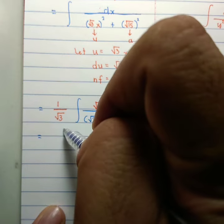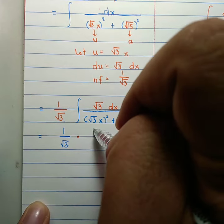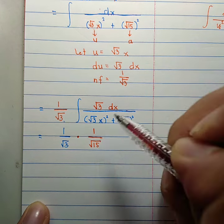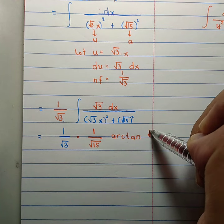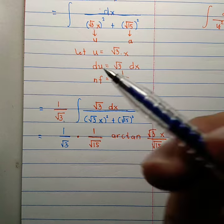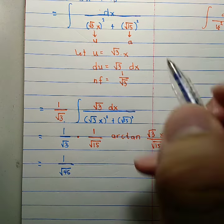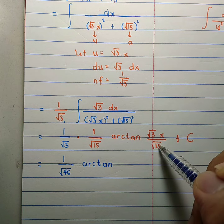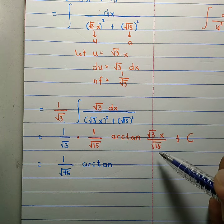We can now apply the formula. We have (1/√3) times (1/a) — where a = √15 — times arctangent(u/a). Simplifying: (1/√3)·(1/√15) = 1/√45. Inside the arctangent, we have √3·x over √15. We can rationalize inside the arctangent by multiplying by √15/√15.